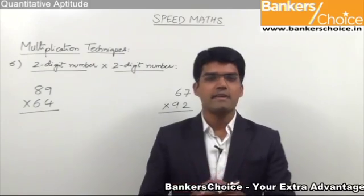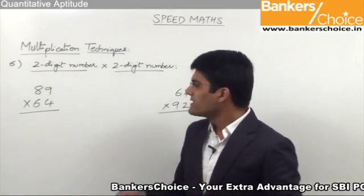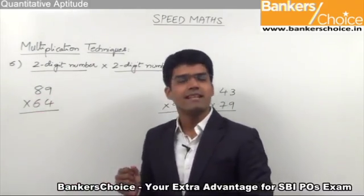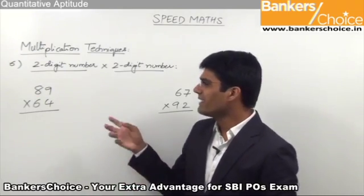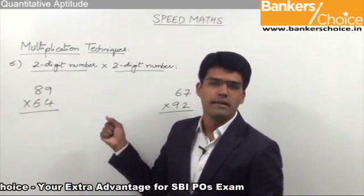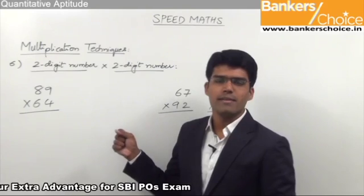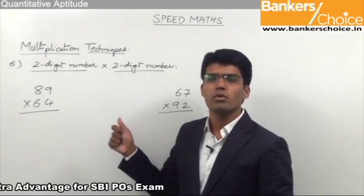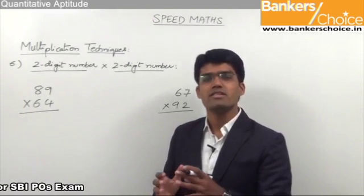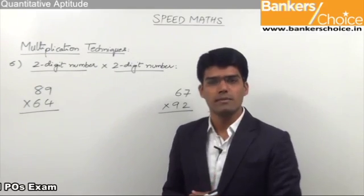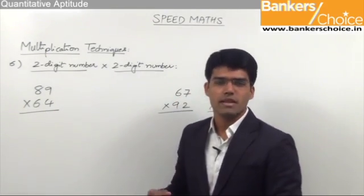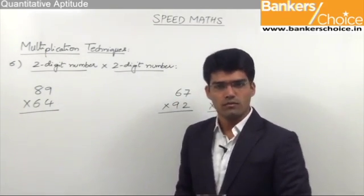Let us take some examples to understand this. Let us say we have to multiply the numbers 89 and 64. As you can see here, splitting and merging will become a little difficult. So here, it is better that we follow the general way of multiplication. Now, if we try to go by the general method of multiplication, it will take a lot of time because the number of steps are more.